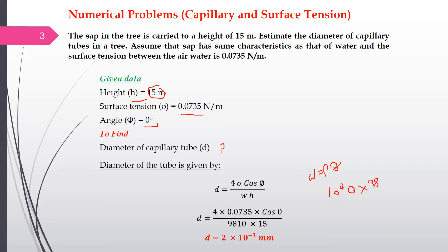Substituting: 4 times σ, cos(φ) = cos(0°) = 1, w = 9810, and h = 15 meters. Upon calculation, the diameter of the capillary tube in the tree is 2 × 10⁻³ mm. This is a basic problem based on capillary action. The next problem we will discuss involves a U-tube manometer.